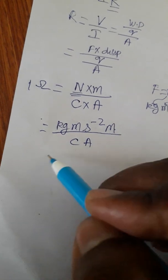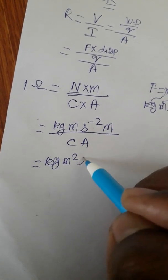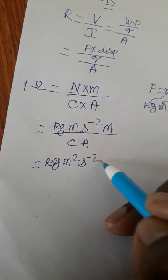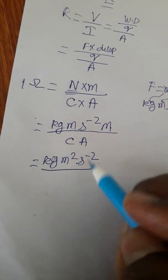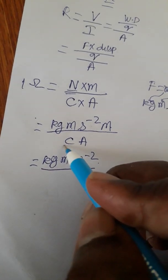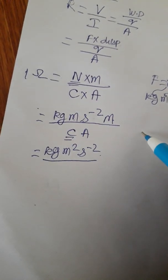Meter times meter gives meter square. So we get kg·m²·s⁻², and we know coulombs does not have a dimension formula on its own.